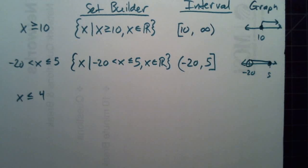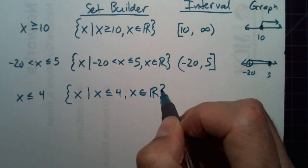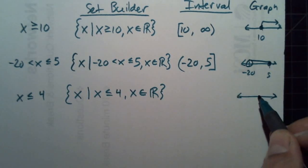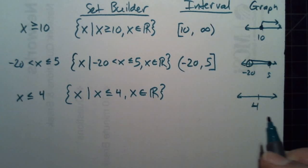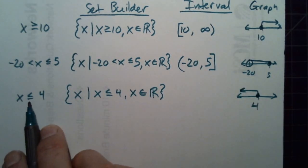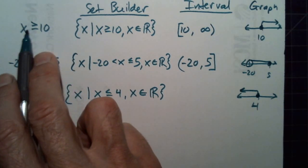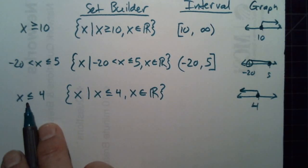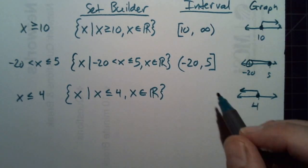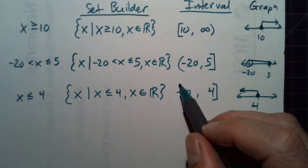Pause the video and try that one. Set builder: x such that x is less than or equal to 4, where x is a real number. Here's 4, and we have a closed circle because it's equal, and we're going to the left. Think of the inequality symbol as an arrow — when it points left it means less than, when it points right it means greater than. The right endpoint is 4, the left endpoint is negative infinity, and we include 4, so we use a bracket there and a parenthesis on infinity.